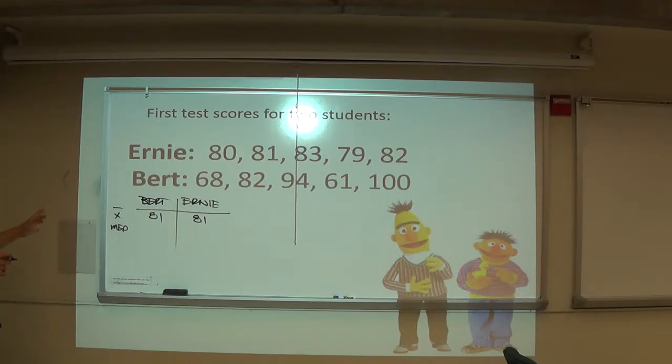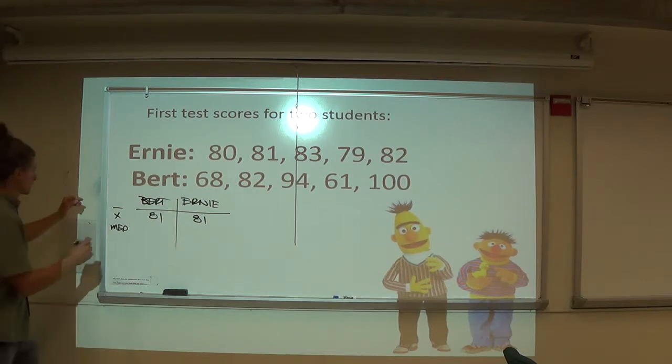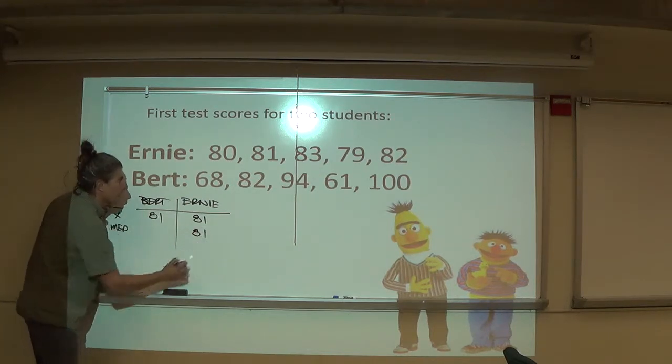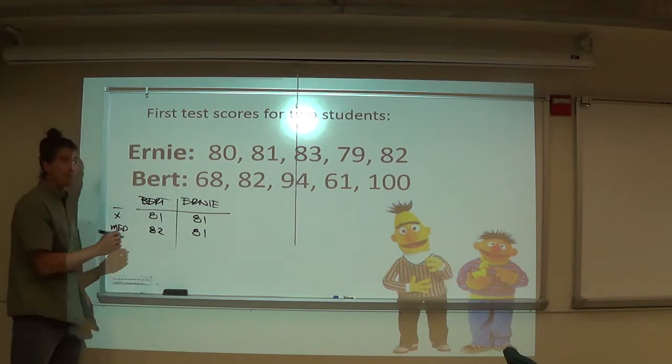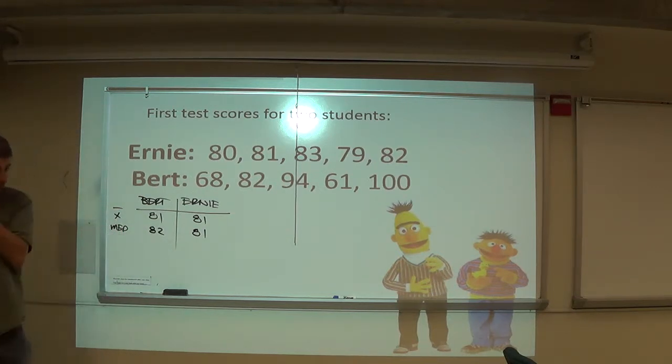Bert, excuse me, median. Ernie's also 81, isn't he, because it's 83, 82, 81, 87, 89, so Ernie's 81. Yeah, Bert's is 82. To which some people said Bert's the better student, because he's got one more point in median, and I said that's fine. That's a quantification.